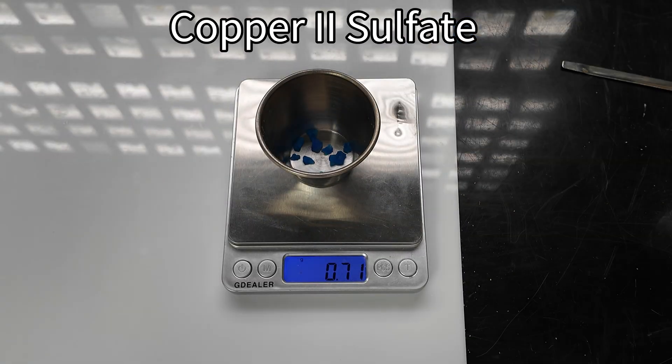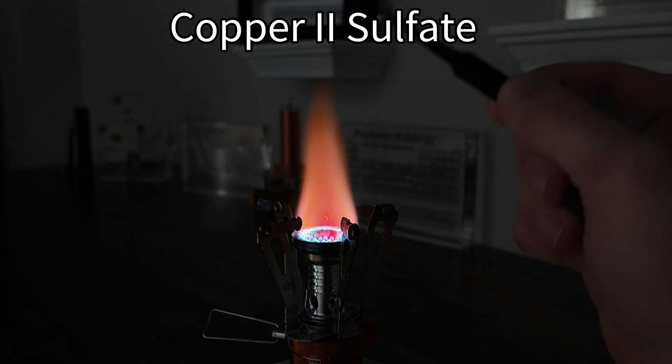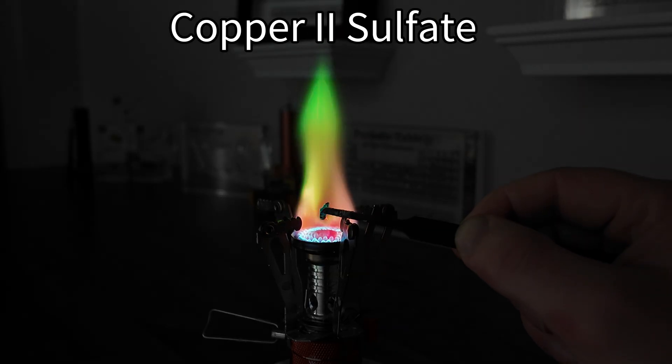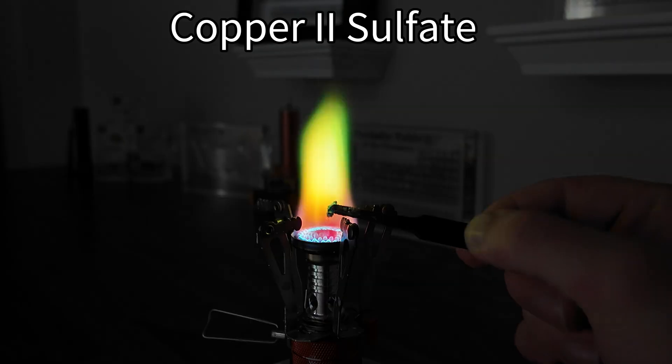Next up, we have copper-2 sulfate. You can use a Bunsen burner for every one of these chemicals. Some of them are easier to see inside of the crucibles, but some of them are easier to see in the flame of the Bunsen burner.